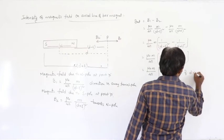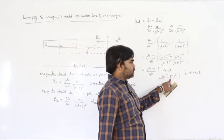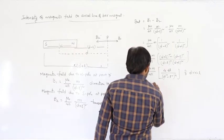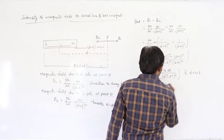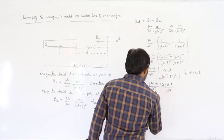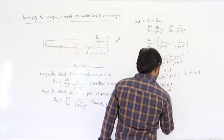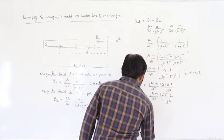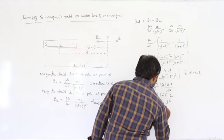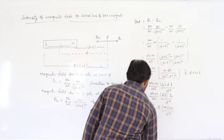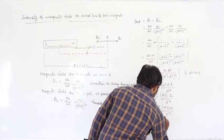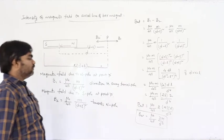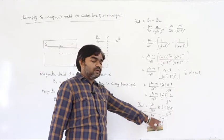Simplifying: B_net = μ₀m/4π × 4dl / (d² − l²)². When d >> l, l is neglected, giving B_net = μ₀/4π × 2M/d³, where M = m × 2l is the magnetic moment of the magnet.